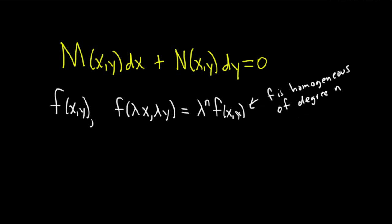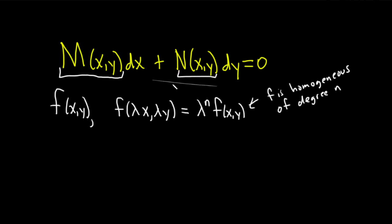So whenever a function satisfies this property, we say it's a homogeneous function of degree n. Some books use alpha instead of n. It turns out that if M is homogeneous and N is homogeneous, and they're both homogeneous of the same degree, then we say the DE is homogeneous.